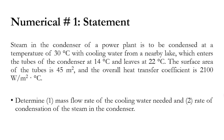Numerical number 1: Steam in the condenser of a power plant is to be condensed at 30°C with cooling water from a nearby lake, which enters the tubes at 14°C and leaves at 22°C. Steam is on the shell side and water is on the tube side. The surface area of the tubes is 45 square meters and the overall heat transfer coefficient is 2100 W/m²°C.